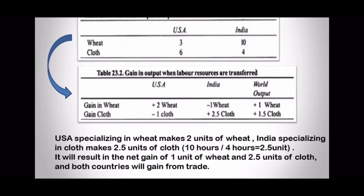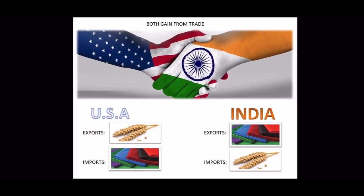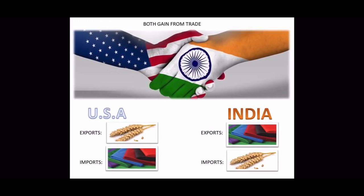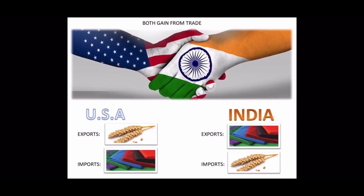With absolute advantage recognition, both countries are gaining. Both gain from trade. USA exports wheat and India exports cloth. USA will import cloth from India, and India will import wheat from USA. In this way, both will trade with each other and will have a gain from this international trade, recognized from the absolute advantage production of a certain good by each country.